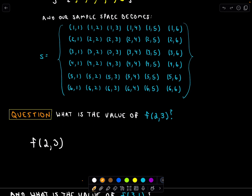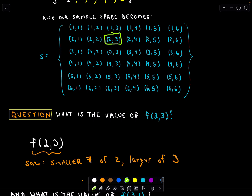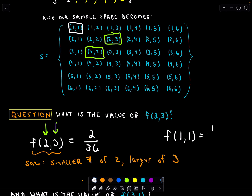Suppose we want to compute f(2, 3). This says we observed a smaller number of 2 and a larger number of 3. The order doesn't matter — it just says that's what we observed. There are two ways that can happen: I could roll a 2 and then a 3, or a 3 and then a 2, and in both cases I'd report 2 as the smaller and 3 as the larger. There are 36 possible outcomes (6 times 6), and two of those are favorable, so the probability is 2/36. For f(1,1), the only way to get a smaller and larger both equal to 1 is to roll a 1 and a 1, giving a probability of 1/36.